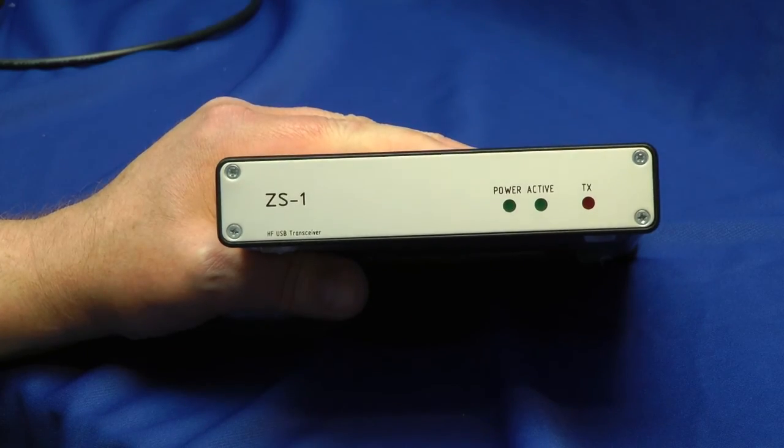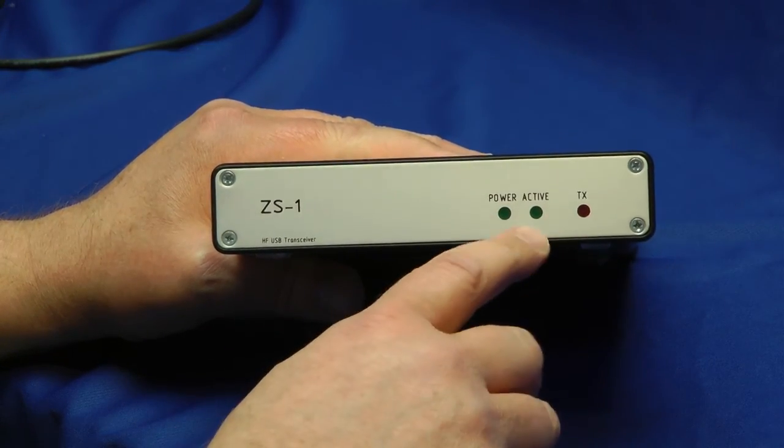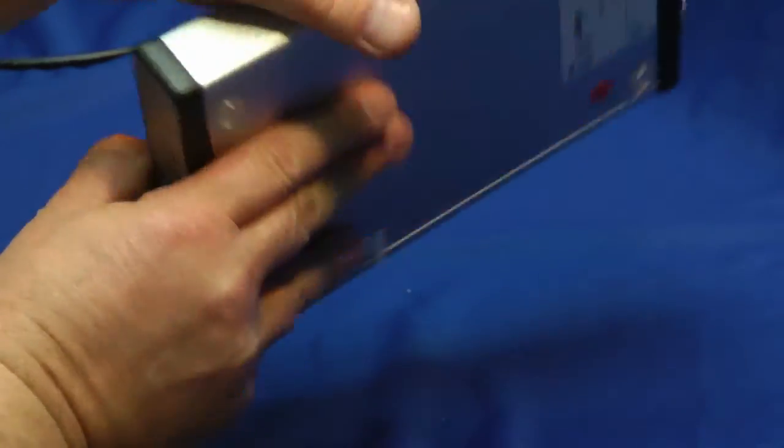Well, here it is. It's not very heavy, the ZS-1. On the front panel, we have a power indicator, an active light when USB is going, and a red LED transmit light. Flip it around the back side.